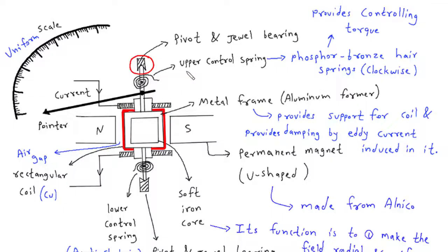The jewel bearing, typically made of synthetic sapphire or ruby, provides a low-friction surface for the pivot to rest on, ensuring smooth and accurate movement of the pointer.